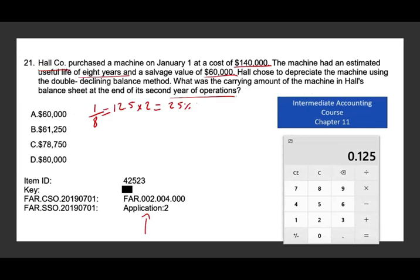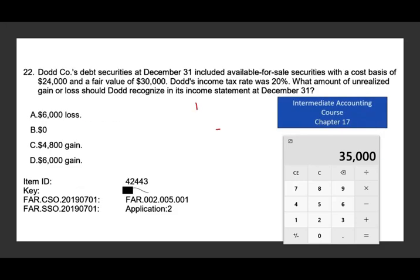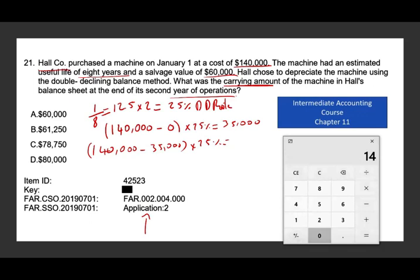They're asking for the book value, the carrying value as of year two. That means we find two years of depreciation and deduct them from the cost. Year one: beginning book value is $140,000 times 25%, giving year one depreciation of $35,000. Year two: $140,000 minus prior depreciation of $35,000 gives a new book value of $105,000, times 25% equals $26,250.